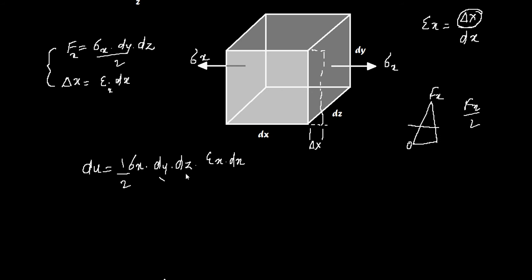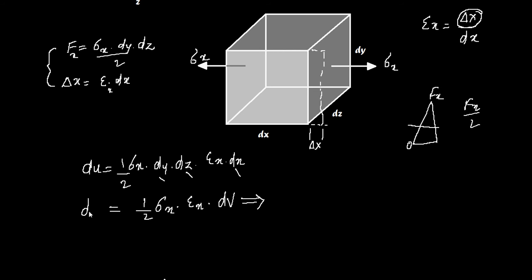So the average internal energy du equals sigma x · dy · dz times epsilon x · dx, divided by 2. These three differentials — dx, dy, dz — constitute the volume of the body, so you can write this equation as: du = (1/2) × stress × strain × dV.